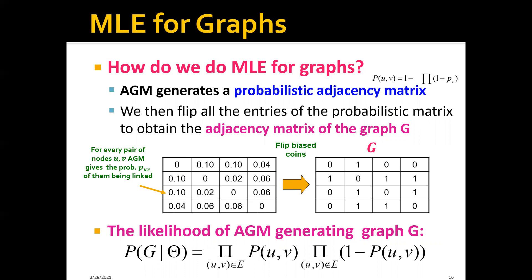And we will generate the adjacency matrix of the graph. So basically we will flip all the coins such that each entry in the matrix is either 0 or 1.